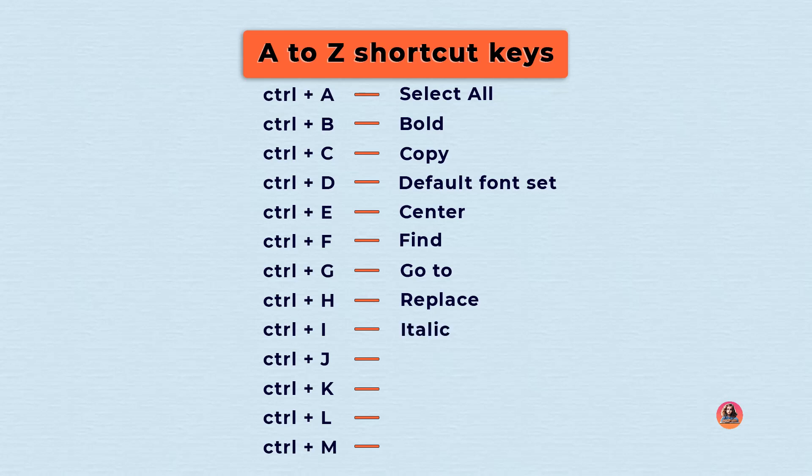Control plus I: italic. Control plus J: justify. Control plus K: hyperlink. Control plus L: align text to left.